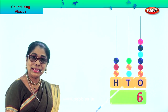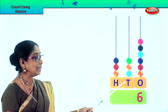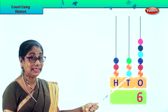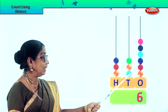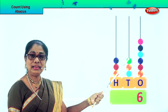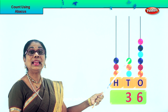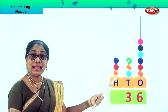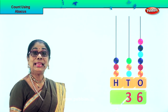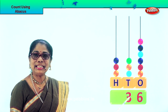Now we go to the 10s place. Count each beat in 10s: 10, 20, 30. There are 3 beats — each is 10. So we put down 3 in the 10s place.